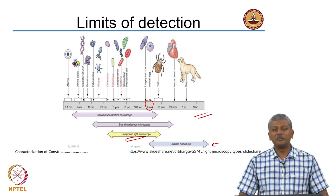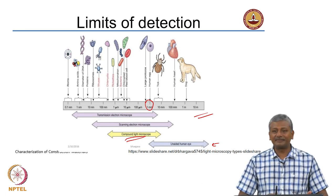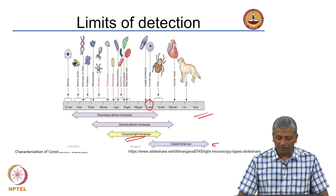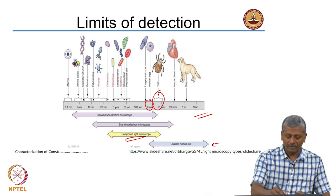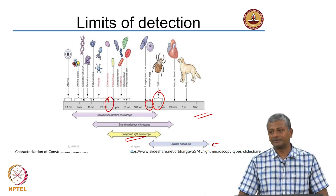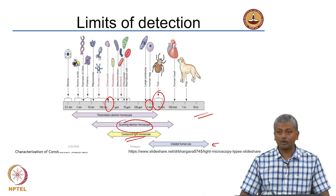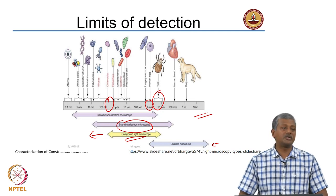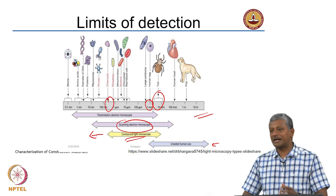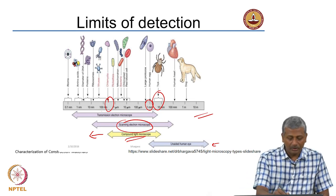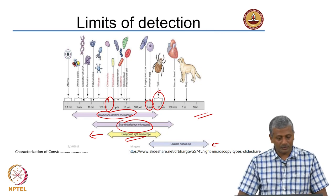Why do we call it the light microscope? Because it corresponds to light in the visible range — the range of wavelengths that constitute visible light in the electromagnetic spectrum. The compound light microscope covers from several millimeters down to about less than a micron. When you go to scanning electron microscopy, you push the limits of detection down to a few nanometers. But SEM also has limitations with nano-sized materials, so for those you need transmission electron microscopy, which can go to atomic or molecular scales.